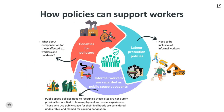To ensure that policies to address air pollution can support workers, we need to consider: firstly, penalties for polluters — for example, polluters should compensate affected workers and residents who are working or living near pollution sources. Labor protection policies need to include informal workers, such as those working in the agricultural sector, the construction sector, and street food vendors.